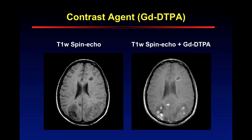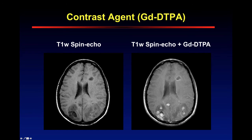Using the contrast agent gadolinium DTPA — this is used on almost every MRI. This is a T1-weighted spin echo pulse. You can see there are some lesions here in the brain, but when you add the gadolinium DTPA on the T1-weighted pulse, you can see lesions throughout this brain. These are actually an amoeba — this patient picked it up in a still lake. You can see the brain-eating amoeba here, detected by the gadolinium DTPA.